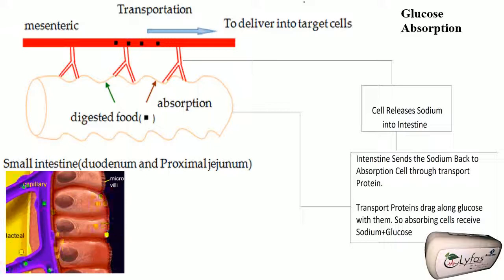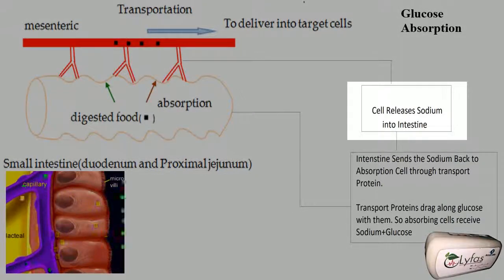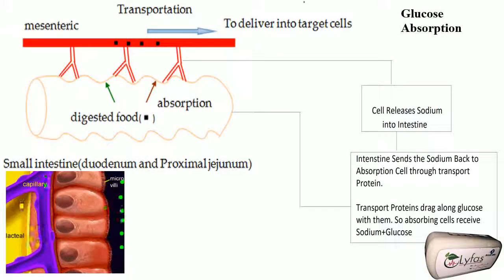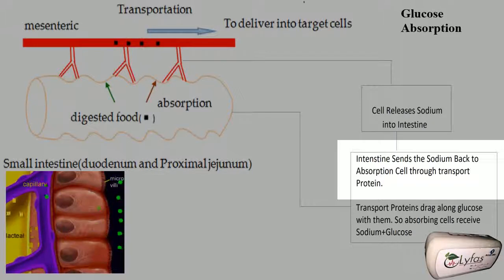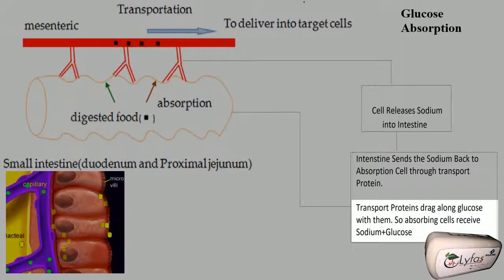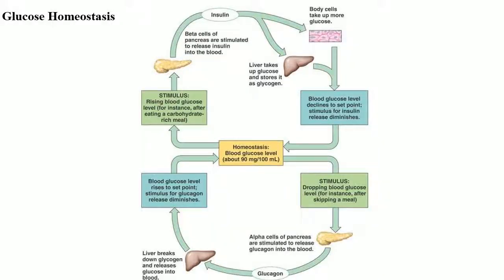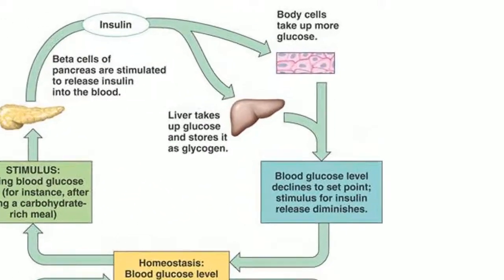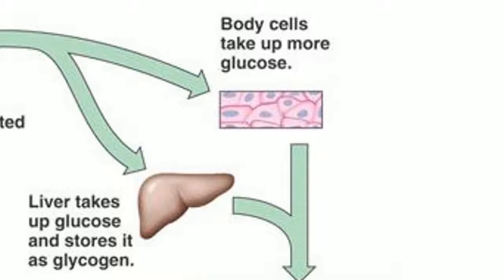The transport of glucose from the intestinal lumen into the absorptive cell has two stages. In the first stage, sodium ions from inside the cells are transported to the intestinal fluid, leading to low sodium concentration inside the cell. In the second stage, because the sodium level has dropped, sodium ions are transported from the intestinal lumen by facilitated diffusion via a protein, which sends sodium back into the cells and drags glucose along with it — that is how glucose enters the absorptive cells.